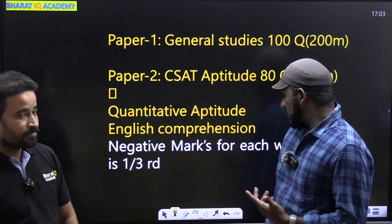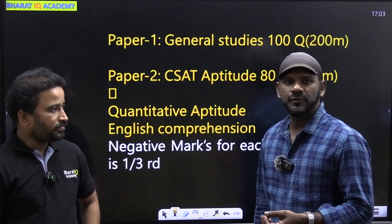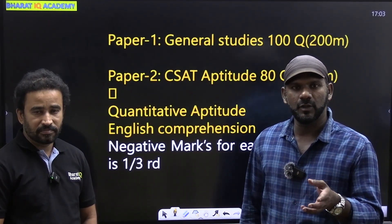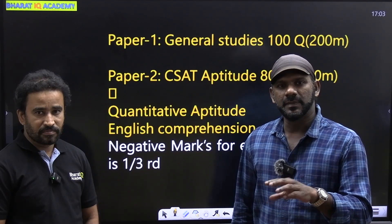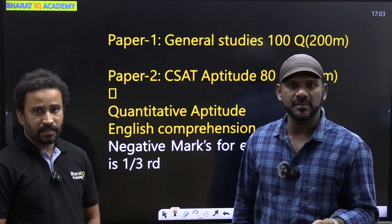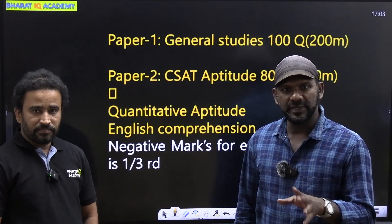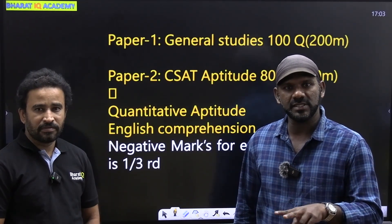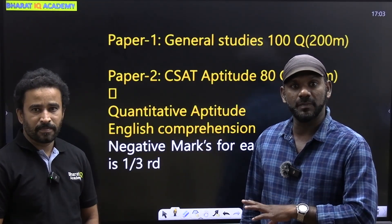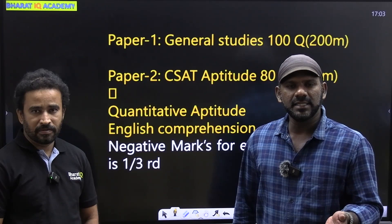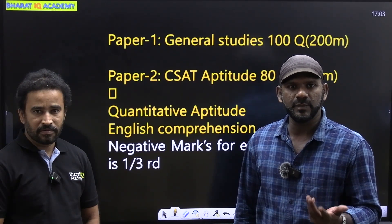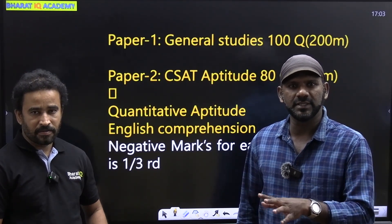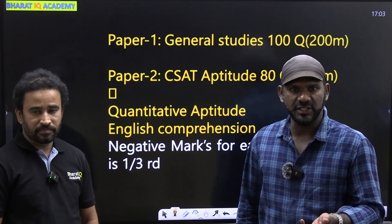Now, in English Comprehension, in the examination point of view, we have only two topics focused here: Reading Comprehension and Logical Reasoning. Because we don't have grammar questions or vocabulary questions — only Reading Comprehension and Logical Reasoning questions. In this section, we have English Comprehension. This year, we have 27 questions in the exam, and it varies — actually 25 to 30 questions based on English.